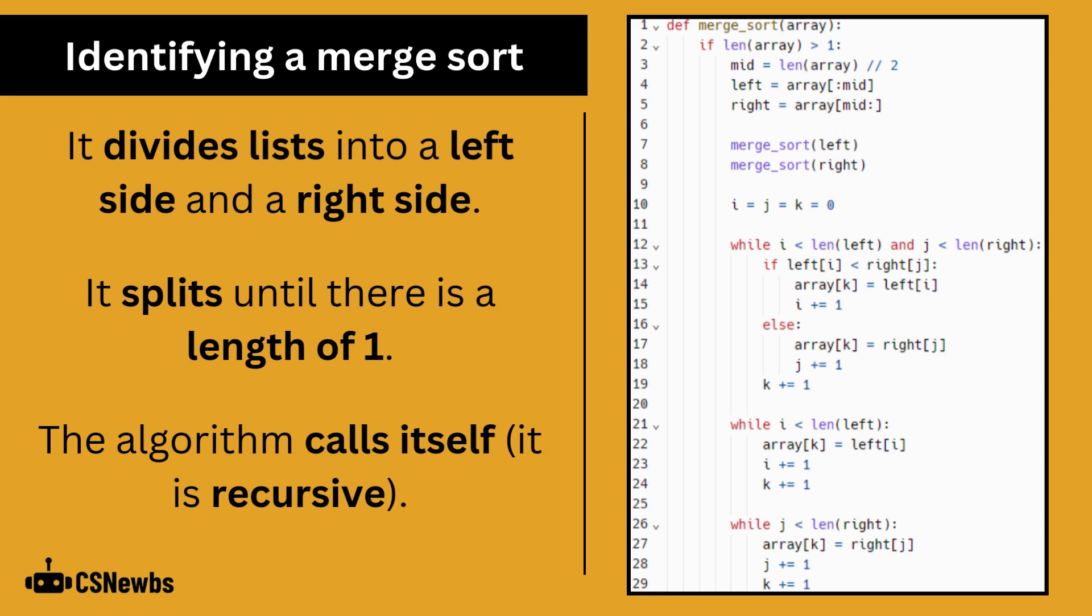Some clues for identifying a merge sort include that it divides lists into a left side and a right side. It splits until there is a length of one, and the algorithm calls itself. This is known as a recursive algorithm.